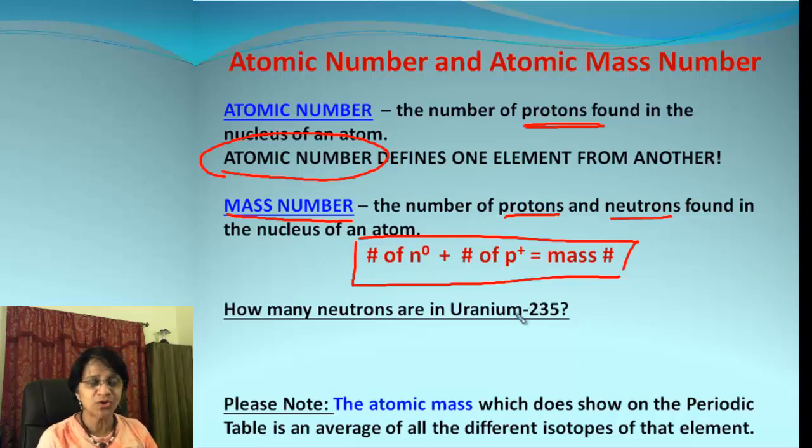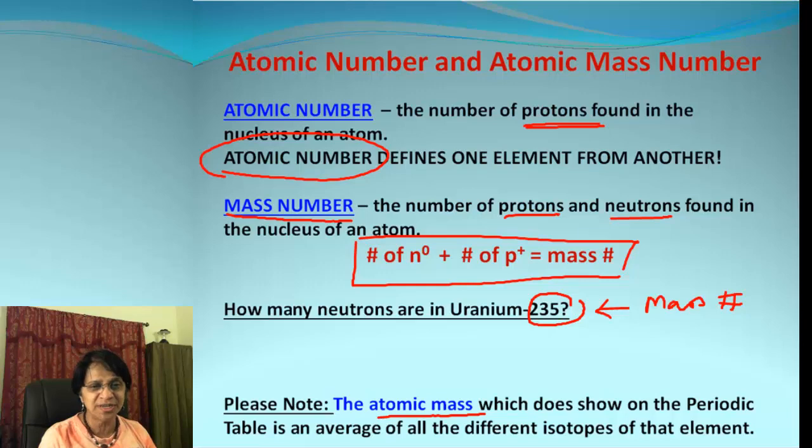Now let's look at this problem. We have to find out how many neutrons are present in uranium-235. Whenever there is a number associated with an element, that number indicates this is the mass number for that element. And remember, the atomic mass which is shown on periodic table is different than the mass number. That is the average mass of all the isotopes. And atomic mass number is the sum total of neutrons and protons.